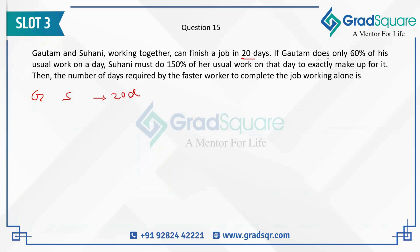If Gautam does only 60% of his usual work on a day — so if the efficiency goes down to 0.6G — then Suhani must do 150% of her usual work. Suhani should become 1.5 times her usual work on that day to exactly make up for it.